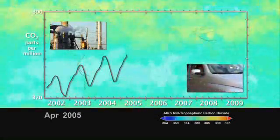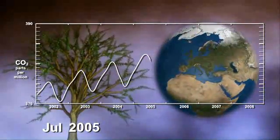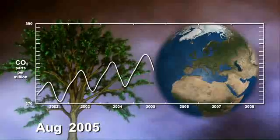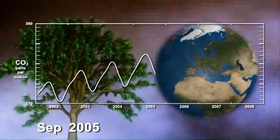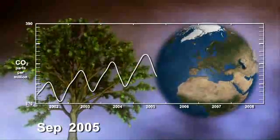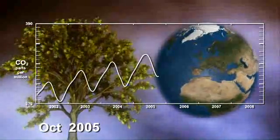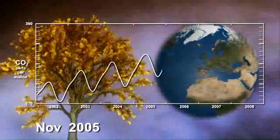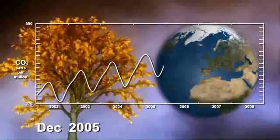In photosynthesis, plants absorb sunlight and carbon dioxide to make oxygen. And in what's known as respiration, plants produce small amounts of carbon dioxide that is released back into the atmosphere.